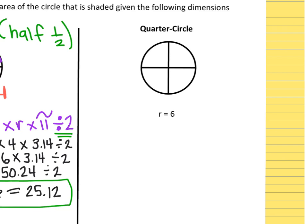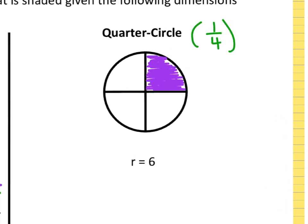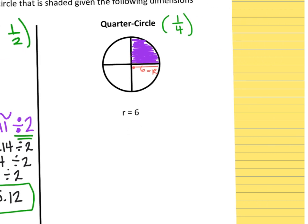Now looking at the right side of the page — this one says a quarter circle. A quarter circle is only one-fourth, so I'm going to shade in one piece, and instead of dividing by 2, this time I'm going to divide by 4. They're already telling us the radius is 6, so that's the number I want to use. I'll label the radius as 6.